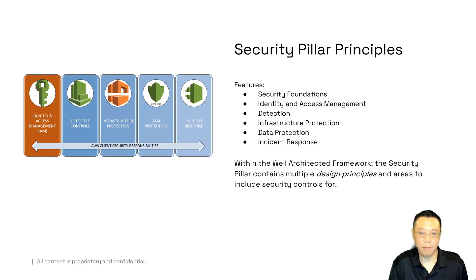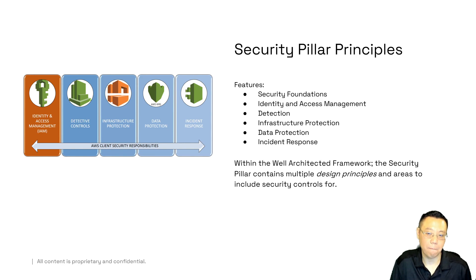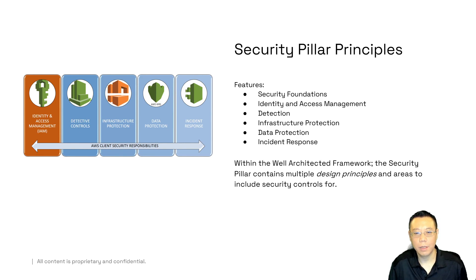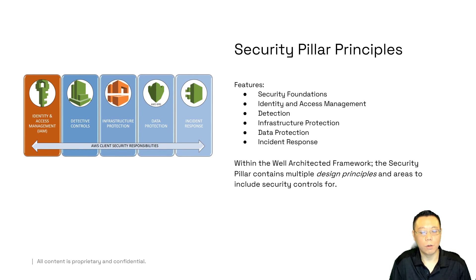Data protection: CIA — confidentiality, integrity, and availability — ensures that data has only the right people looking at it at the right time. Finally, we have incident response should an actual cybersecurity event occur. This is all within the Well-Architected Framework. Identity access management, detective controls, infrastructure protection, data protection, and incident response are all operationally part of your entire organization that uses Amazon Web Services products. Remember: AWS is required to provide security of the cloud, and you are required to provide security in the cloud.